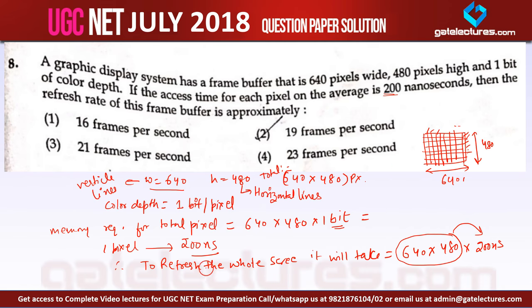Now if you multiply this, this total amount, I have already calculated this amount. So this amount will be 61,440,000 nanoseconds for 1 screen to get refreshed.